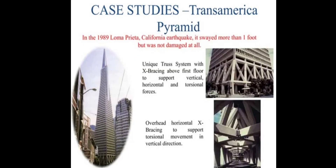The second case study is the Transamerica Pyramid. During the 1989 Loma Prieta, California earthquake, it swayed more than one foot but was not damaged at all. It features a unique truss system with X-bracing above the first floor to support vertical, horizontal, and torsional forces, along with horizontal X-bracing to support torsional movement in the vertical direction. Using this method, there was least damage at all.